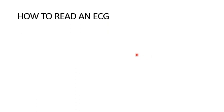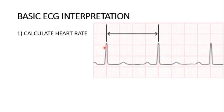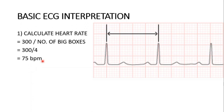Now the important and interesting part — how to read an ECG. Imagine your senior gives you an ECG to read. First, calculate the heart rate. Take any lead and identify the QRS complex — specifically the R wave. Between two R waves, count how many big boxes there are. The formula is 300 divided by the number of big boxes between two R waves. If there are about four boxes, then 300 divided by 4 gives a heart rate of 75 beats per minute.